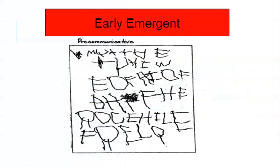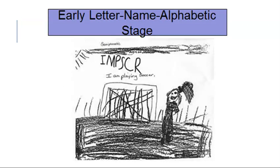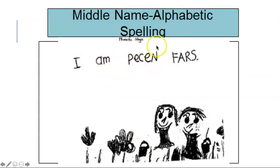Early emergent or pre-communicative spelling looks like a mix — you can see some recognizable letters like F, E, Q, and L alongside symbols that look more like humanoid figures. In the early letter-name alphabetic stage, you start seeing very recognizable letters and can begin to see invented spelling. In the middle stage, you can start seeing the invented spelling and separation between words more clearly.